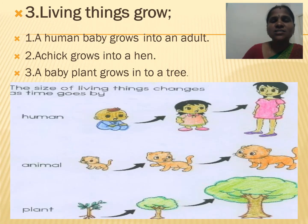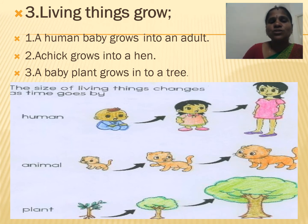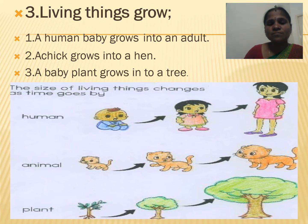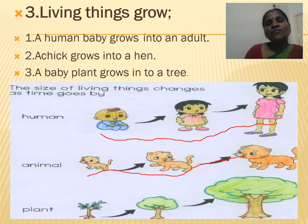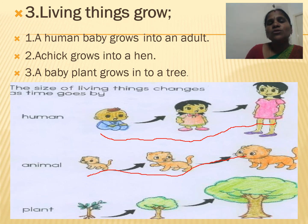Let's see the third characteristic of living things: living things grow. All living things can grow with the help of food. A human baby grows into an adult. A small baby grows into an adult stage. Even animals also grow from a small baby into an adult. Some animals give birth directly and some animals lay eggs — like birds and insects lay eggs, while other animals give birth directly.